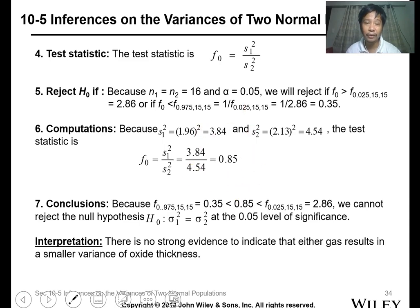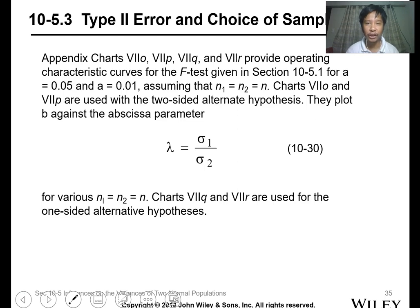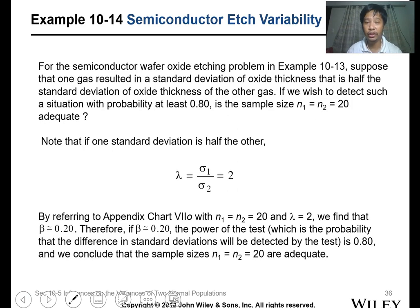Conclusion: because your F value 0.85 is between 0.35 and 2.86, you cannot reject the null hypothesis at the 0.05 level of significance. Therefore, the interpretation is there is no strong evidence to indicate that either gas results in a smaller variance of oxide thickness. You can also use lambda, the ratio of the values. This isn't discussed much or commonly taught, but you can use this to calculate errors.